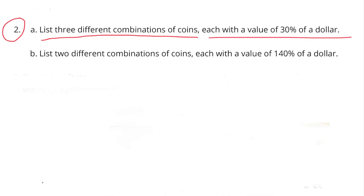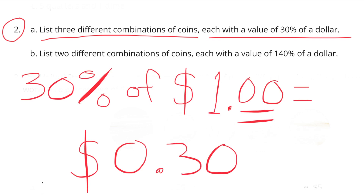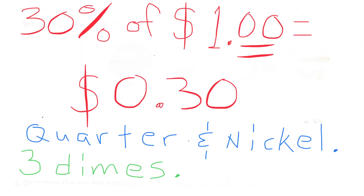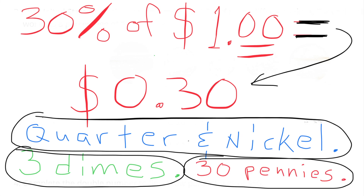Number 2A. List three different combinations of coins, each with a value of 30% of $1. 30% of $1 equals 30 cents. Different ways to represent 30 cents are: one quarter and one nickel; three dimes; or 30 pennies. These are just three of them.